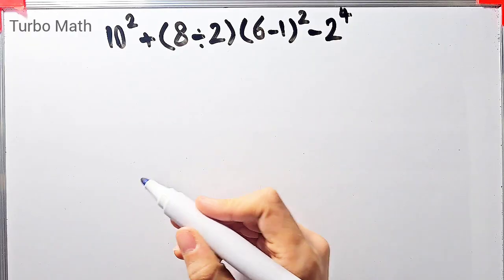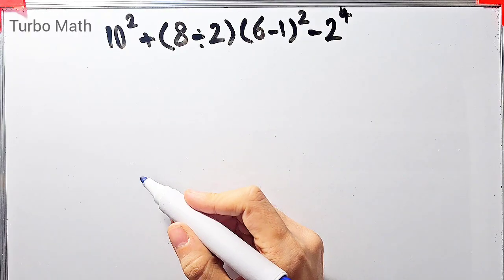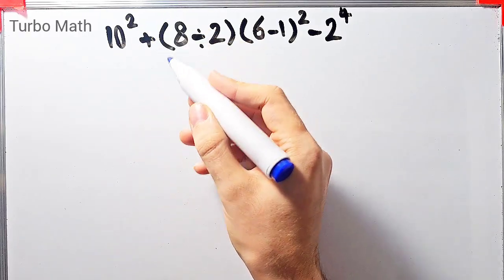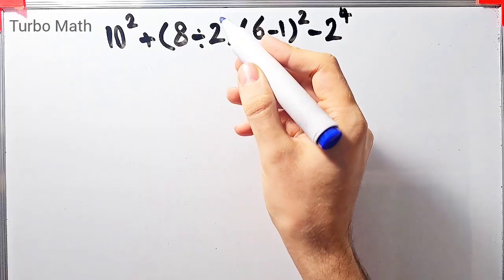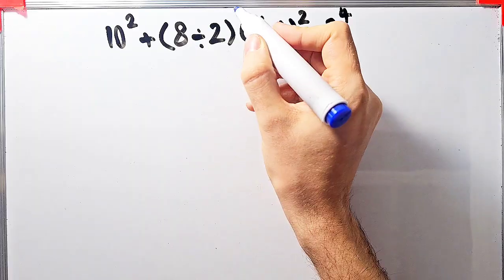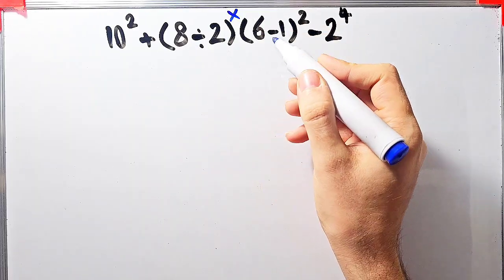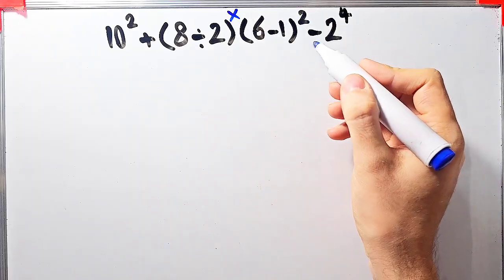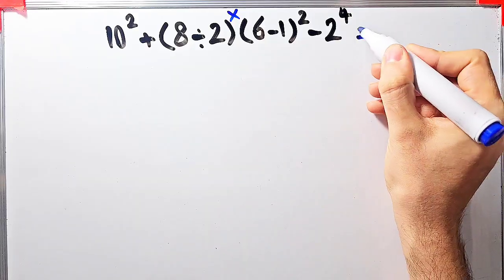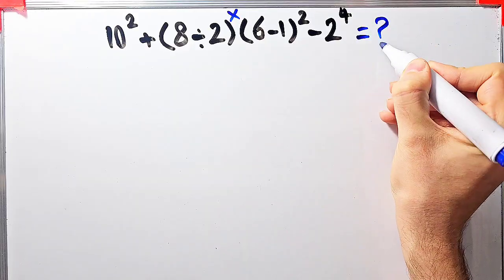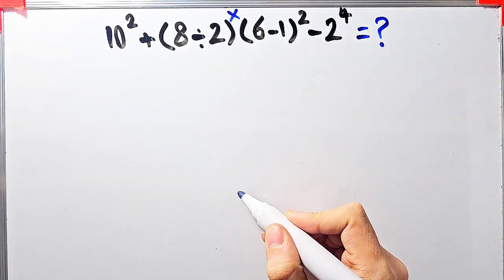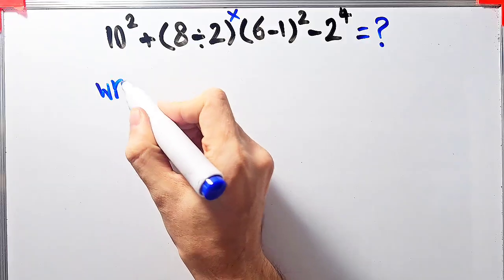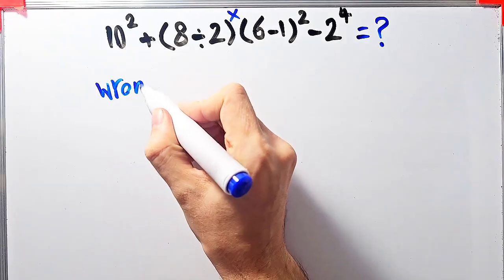In the first question we have 10 to the power of 2, plus open parenthesis 8 divided by 2 closed parenthesis, then times open parenthesis 6 minus 1 closed parenthesis, then all of them to the power of 2, minus 2 to the power of 4. What is the answer of this question?